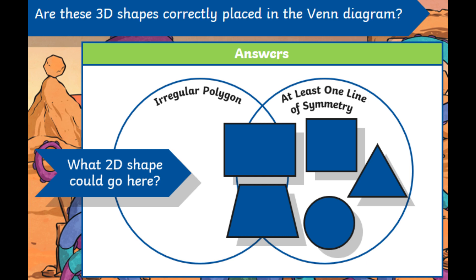So, year five, can you suggest to me what shape, what two-dimensional shape could go here? An irregular polygon. You'll notice it can't have at least one line of symmetry. Otherwise, it'll end up in a different part of this Venn diagram. So, an irregular polygon with no lines of symmetry. Have a little think about that. And it'd be really good if you could draw one and send that in to the year five email address. I'm going to see what you can come up with. I'm going to have a go at that one myself.